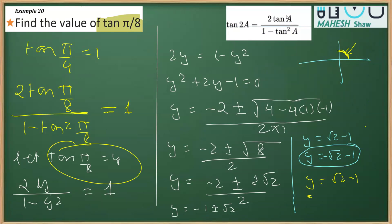Since y = tan(π/8), we conclude that tan(π/8) = √2 − 1. That is how we obtain the final value.